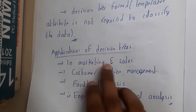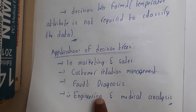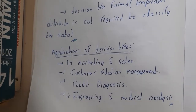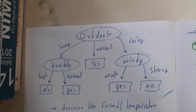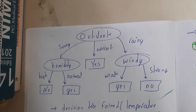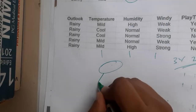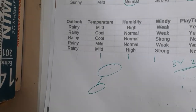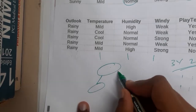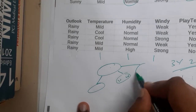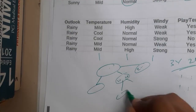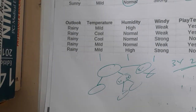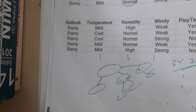The applications of decision trees include decision making, customer relationship management, fault diagnosis in engineering and medicine. It can be used anywhere you want to classify something based on inputs. For example, as a sales employee, you can check whether a person will buy a laptop based on their age — under 16 might not buy, between 18 to 25 likely will, over 30 less likely. Based on these inputs, you can decide whether to send them an ad or a message.